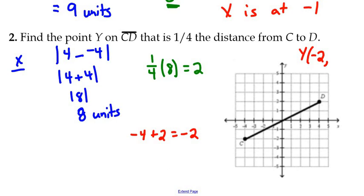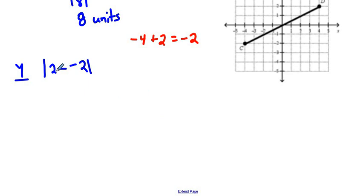Now let's go for the y component. And we're going to repeat the same process. Coordinate D has a y value of 2. And we'll subtract the y component of coordinate C, which is a negative 2. 2 minus negative 2 is 2 plus 2, which is 4. The absolute value of 4 is 4 units. Continuing with the process, we're looking for a point that's a quarter of the way. So a fourth of 4 is 1.